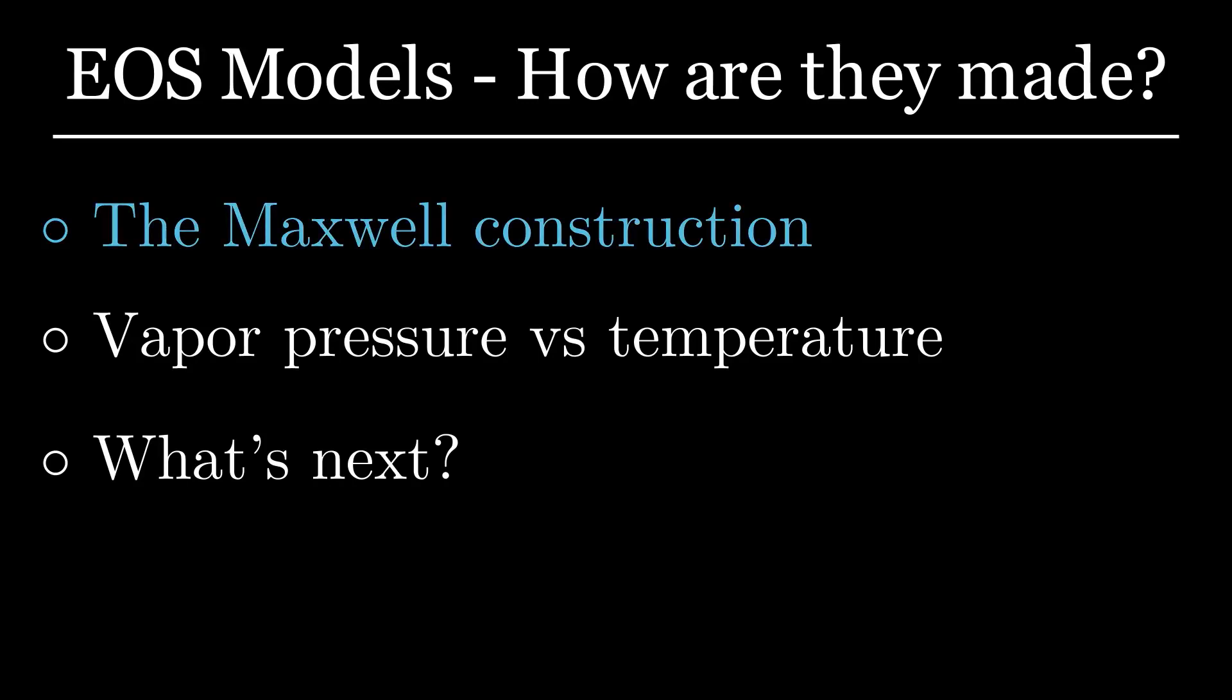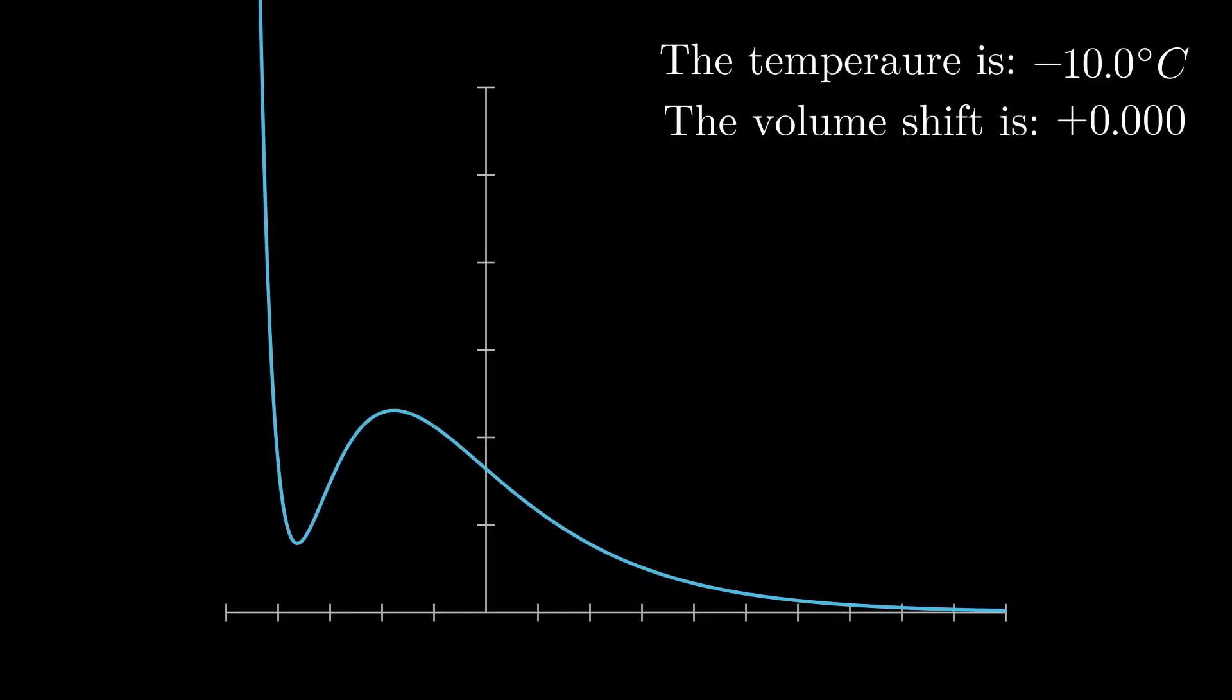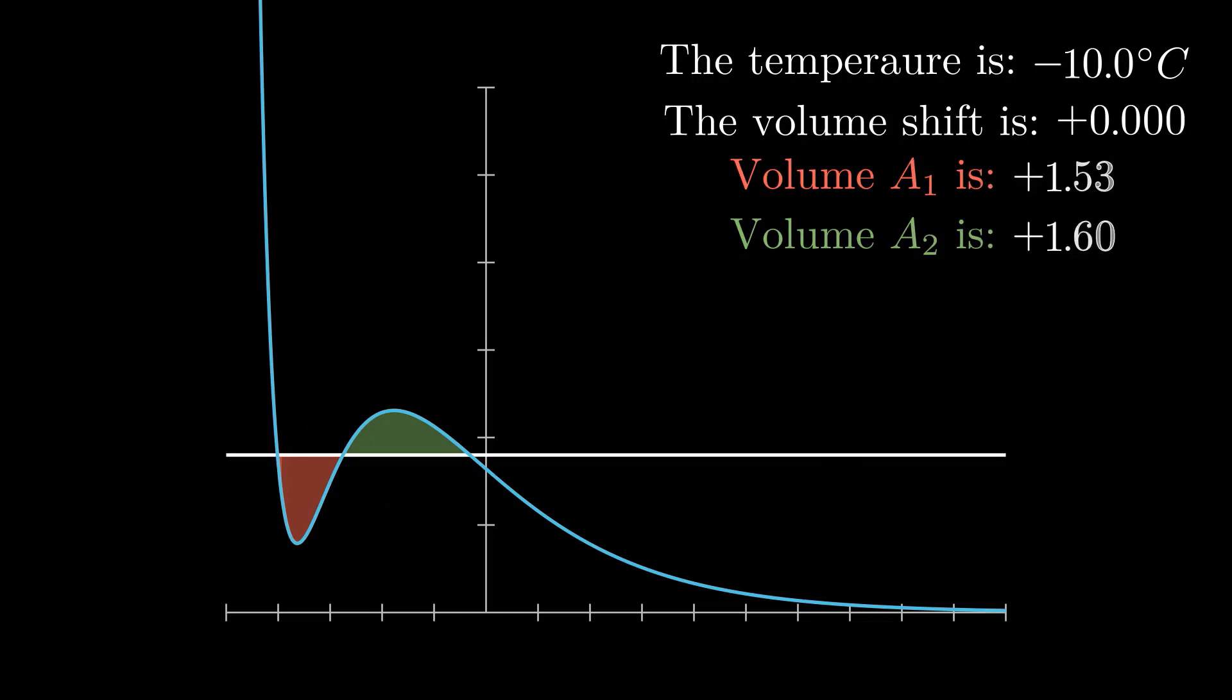Let's start off by diving into the Maxwell construction. We have our now familiar cubic equation of state graph and we take an estimate of what we think the vapor pressure is. Then we get two areas A1 and A2. If we calculate these areas we see that they're not exactly the same and this is going to be our rule for finding the vapor pressure. We want these two areas to be equal.